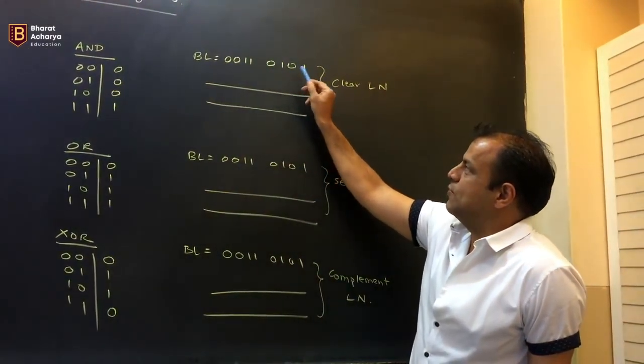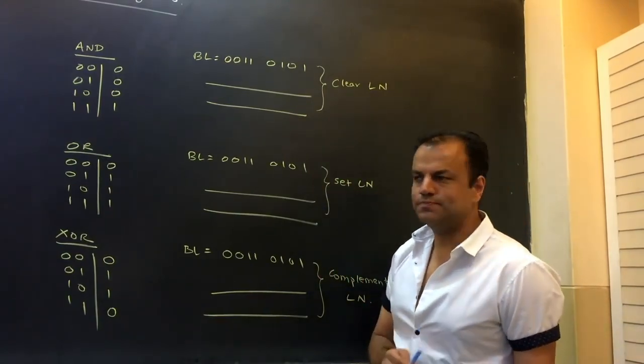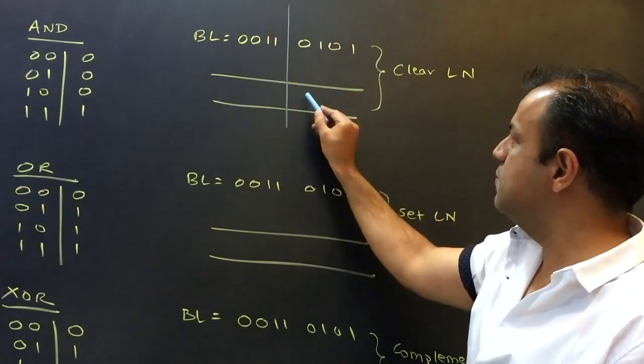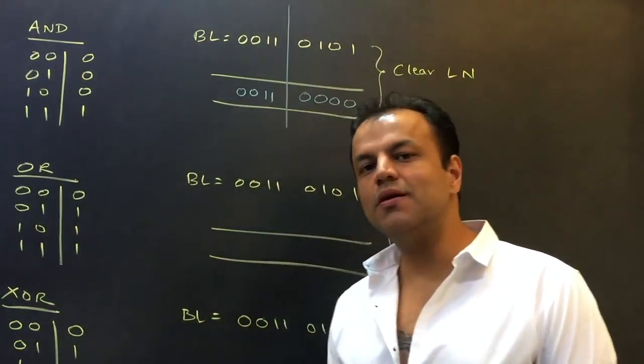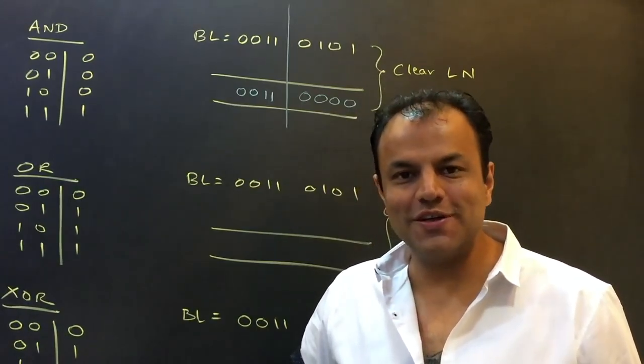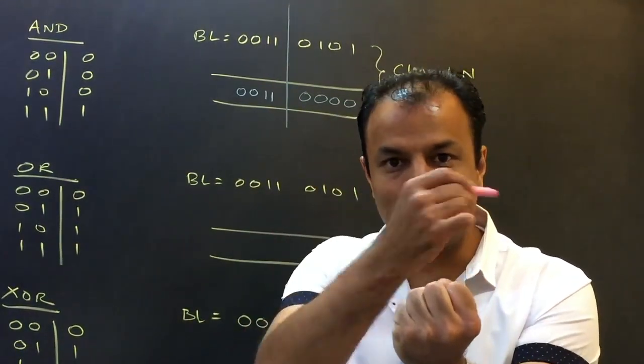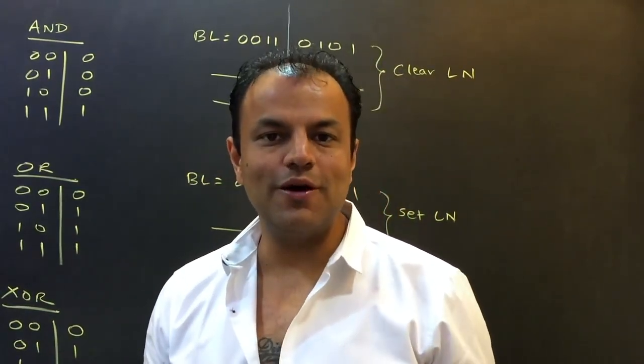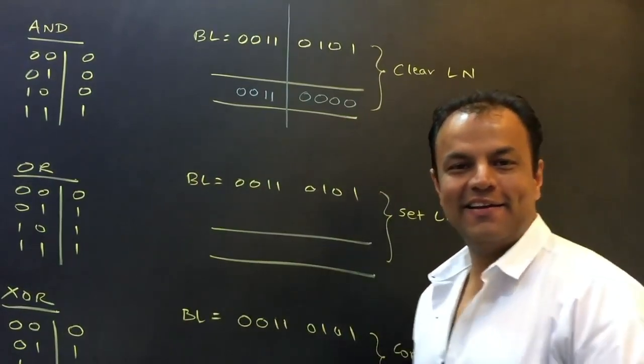Suppose BL register is 0011 0101. It's an 8-bit register. This is 3, this is 5. So the number right now is 35. Now, suppose somebody tells you, clear the lower nibble. Clear the lower nibble means this is the lower nibble, it should become 0. But the higher nibble should remain the same, which means 35 should become 30. So you would say, what's the big deal? Subtract 5. Yeah, my friend. You will subtract 5 if you know that the number is 35. What if the number was 37? Then you have to subtract 7. Problem is, you don't know what the number is. This is a number I have got from memory. Now clear out the lower nibble without affecting the higher nibble. You don't even know what the number is. How will you know what to subtract?